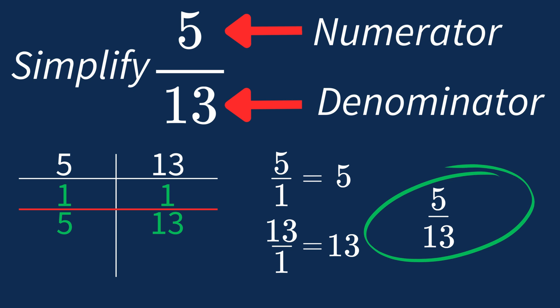There's no larger number that can divide both parts evenly. So 5 over 13 is an irreducible fraction, meaning it's as simple as it can get. In future, if the largest common factor is 1, you know that fraction is already in its simplest form.